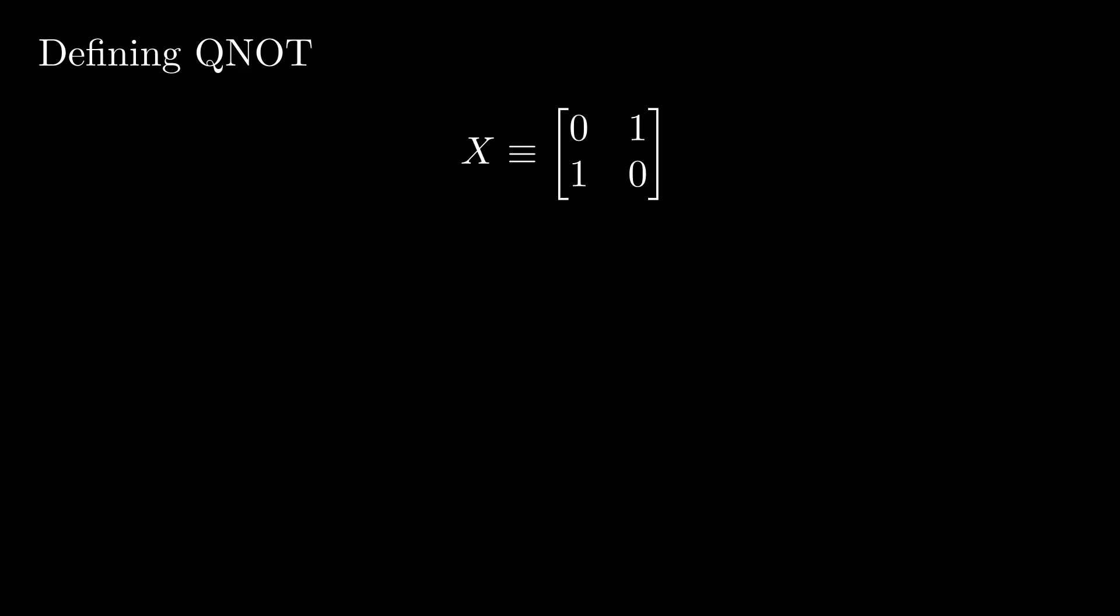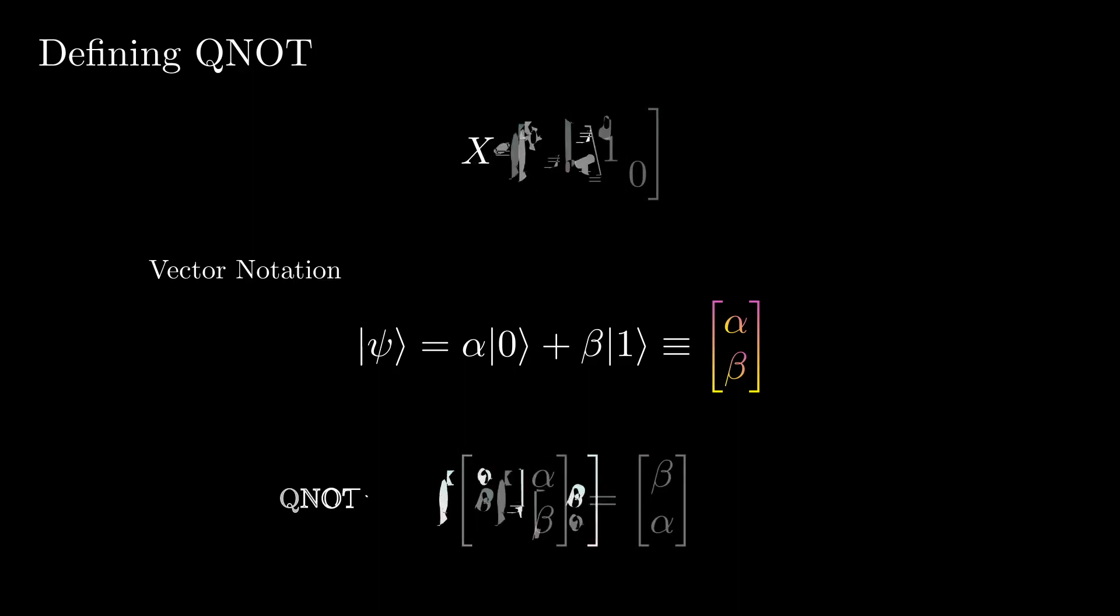The Q-NOT transformation for a two-qubit system can be represented by the following two-by-two matrix. Using matrix vector notation to represent the state vector, we can easily verify that applying this two-by-two matrix on the state vector switches the locations of alpha and beta, performing the Q-NOT transformation.